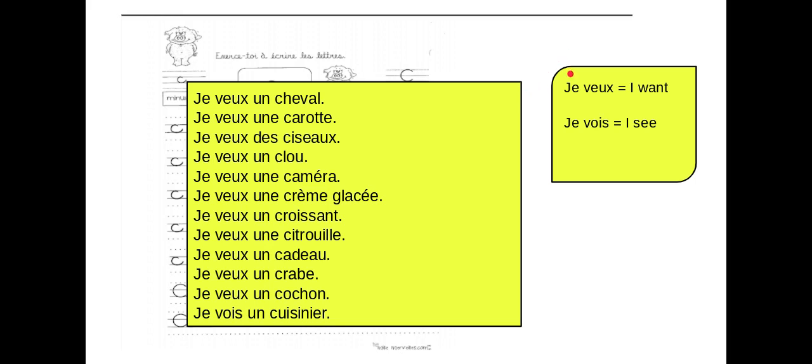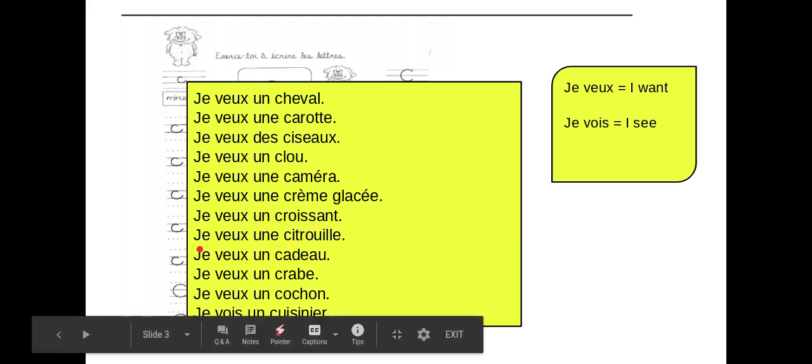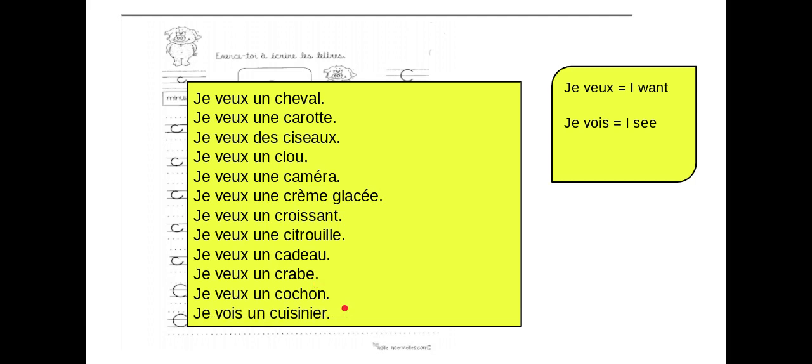Pour répéter. Je veux un cheval. Je veux une carotte. Je veux des ciseaux. Je veux un clou. Je veux une caméra. Je veux une crème glacée. Je veux un croissant. Je veux une citrouille. Je veux un cadeau. Je veux un crabe. Je veux un cochon. Et finalement, je vois un cuisinier.